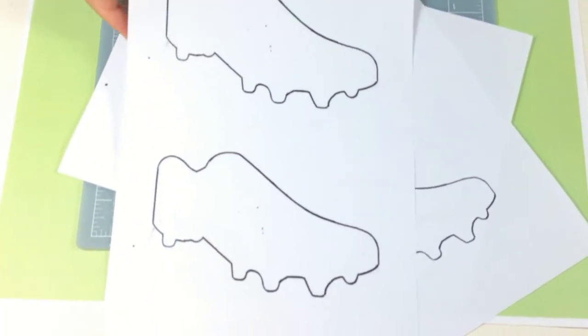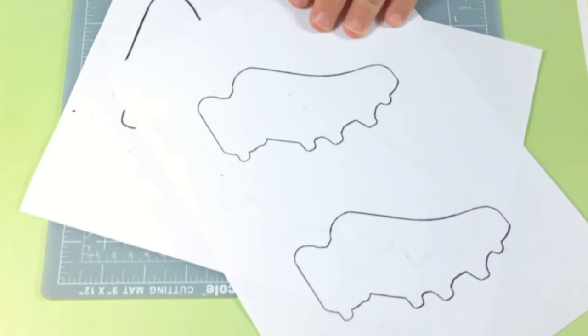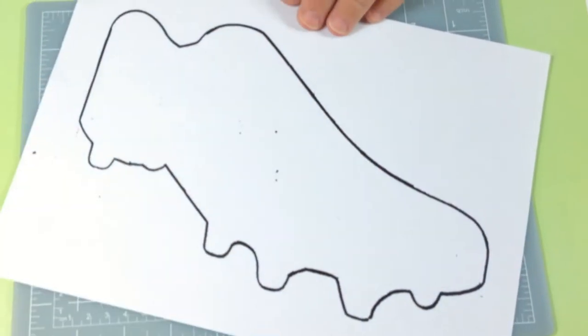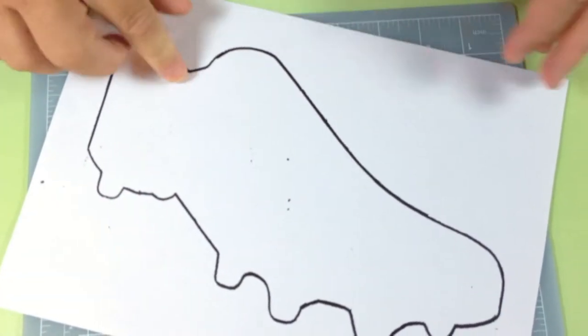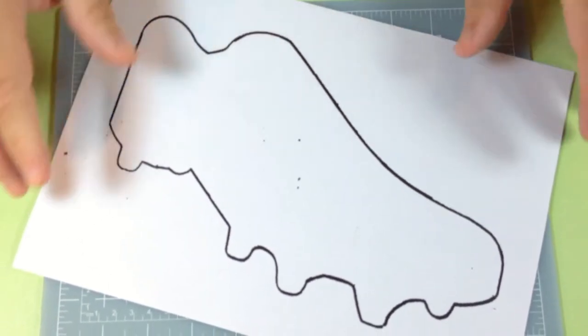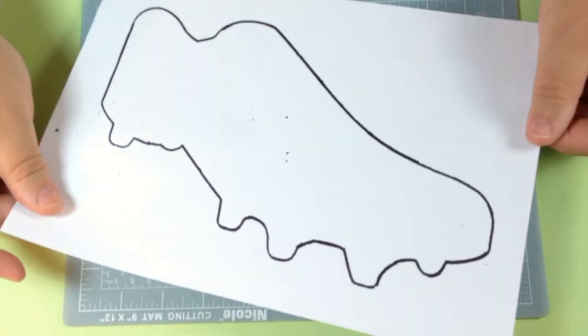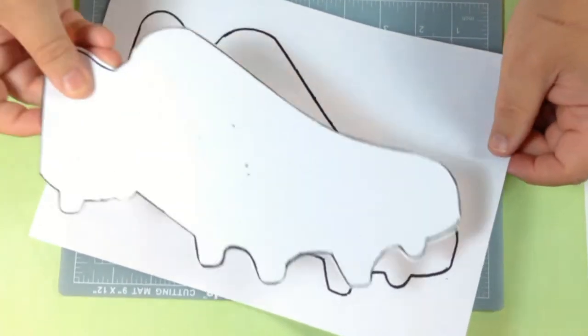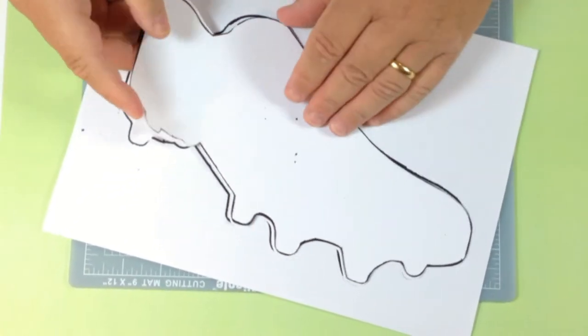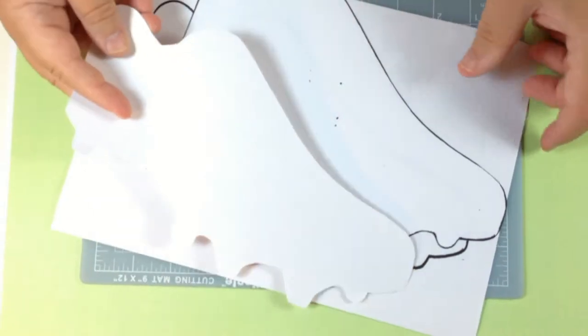You've got two techniques here depending on the size of the boot. We're going to be demonstrating this one first here. Now the first piece of card you put underneath, decide the color that you want, and you just cut around it.